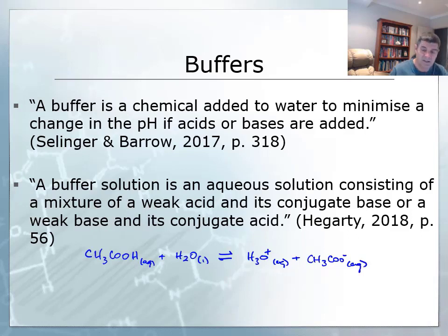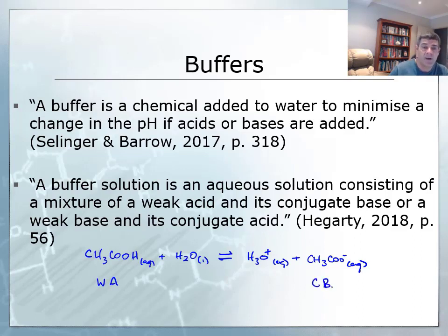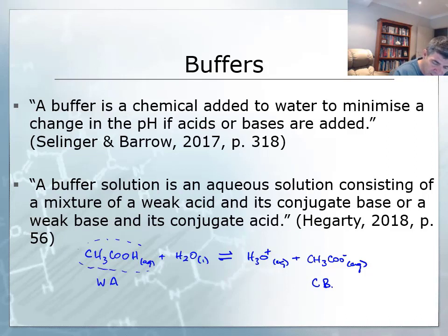This is a standard example. Here is our weak acid and here is our conjugate base — we've identified both of these two things. Because this is a weak acid, there is an equilibrium that lies to the left, so it favors the retention of the molecule rather than the ion.